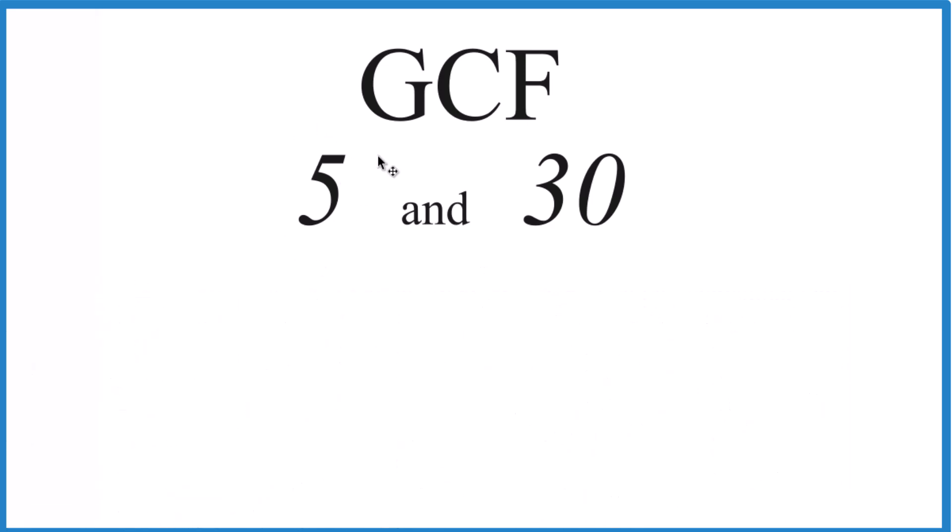We need to make a list of all the factors of 5 and 30, look at the ones that are in common with both numbers, and choose the greatest. 5 is pretty simple: 1 times 5, those are the factors of 5.